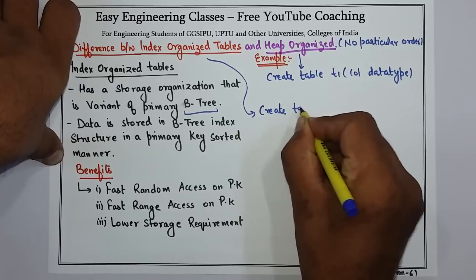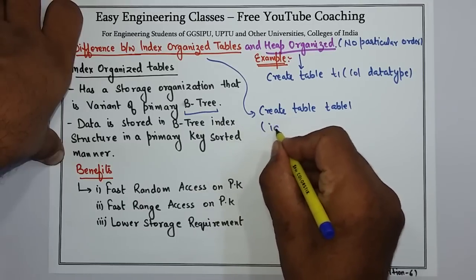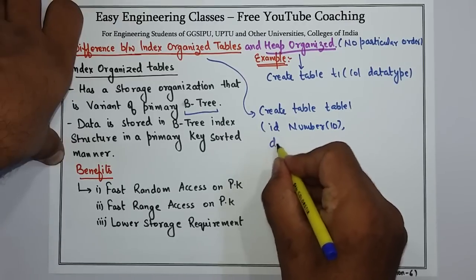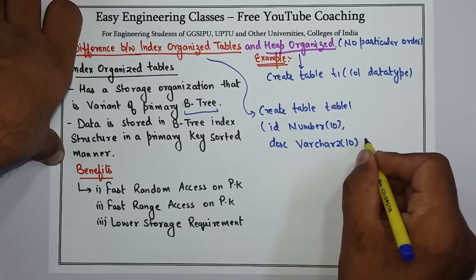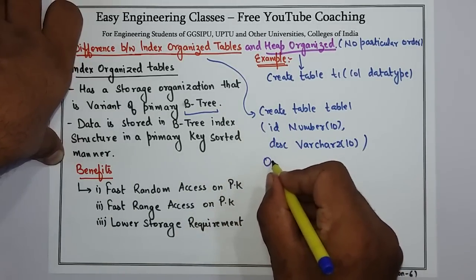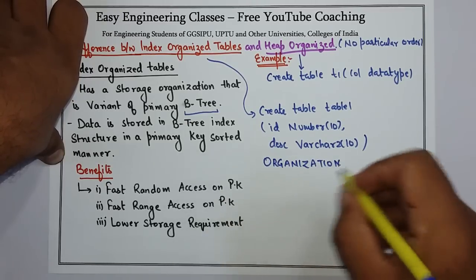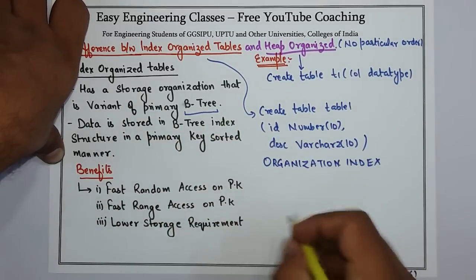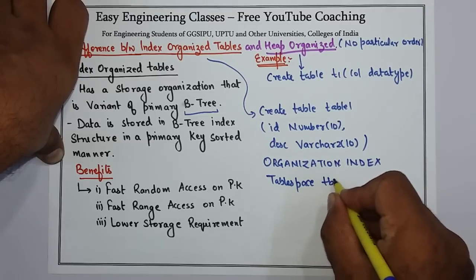To create an index organized table, you write the CREATE TABLE command, followed by the table name — suppose 'table1' — then the columns, for example 'id' with NUMBER(10) and a 'description' column. After defining the columns, you have to write ORGANIZATION INDEX. This particular line specifies that this table is an index organized table. Then you mention the TABLESPACE and the name of the tablespace, for example 'tablespace1'.